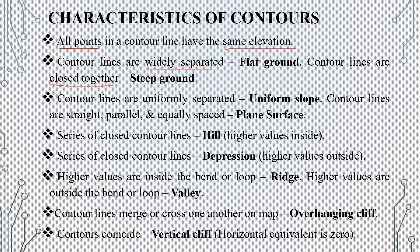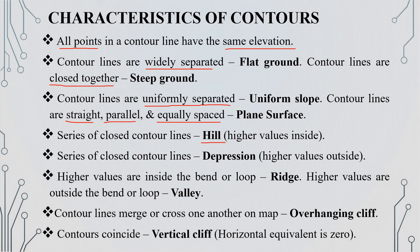For a uniform slope, contour lines are uniformly separated. Contour lines are straight, parallel, and equally spaced. In the case of a hill, contour lines are closed, and higher values are indicated in the inside portion.